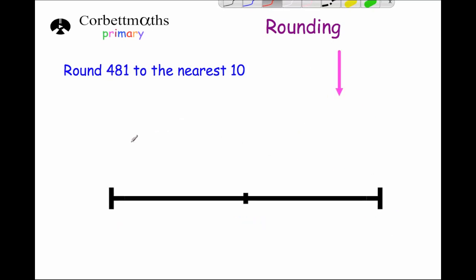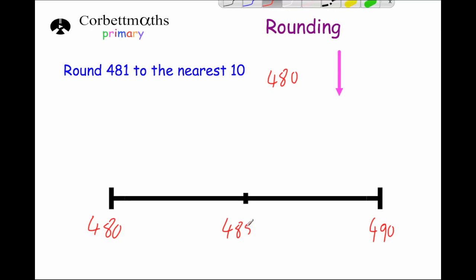Let's have a go at this one without using the number line. Round 481 to the nearest ten. Well, 481 is going to be in between 480 and 490. Now 481 would be much closer to 480 than it is to 490, so the answer would be 480. Just to confirm: between 480 and 490, the midpoint is 485, and 481 is below that, so the answer is 480.